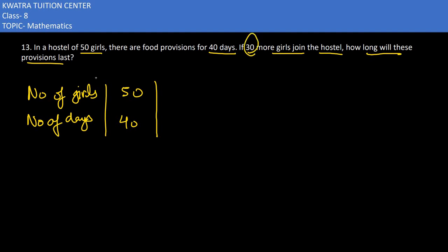It means 50 was there, now 30 more has been added to it, which becomes 80. Now in the next case, they are asking how many days the provision would last.